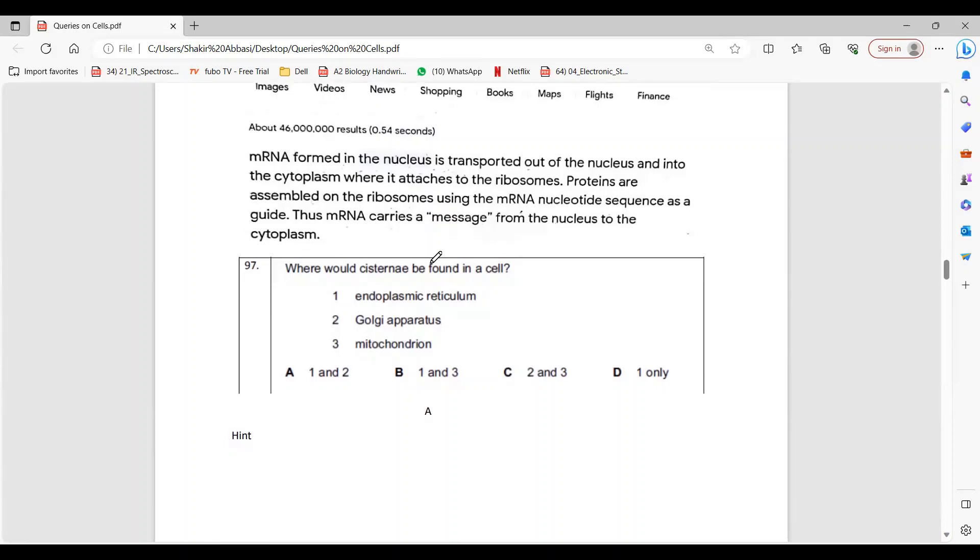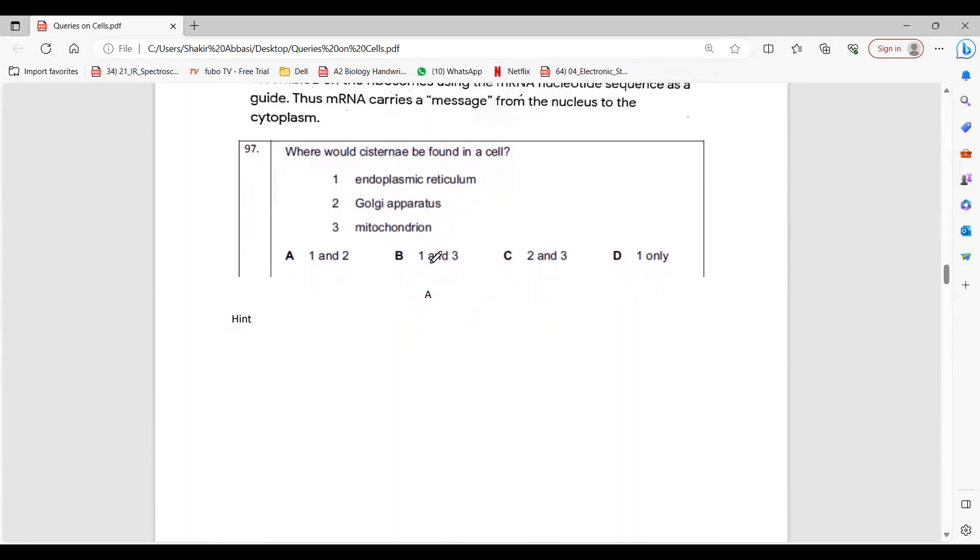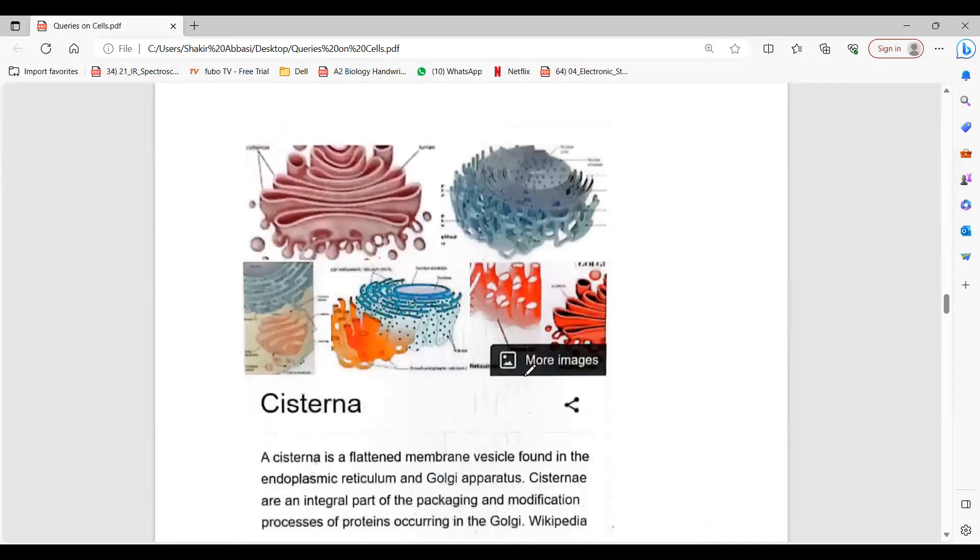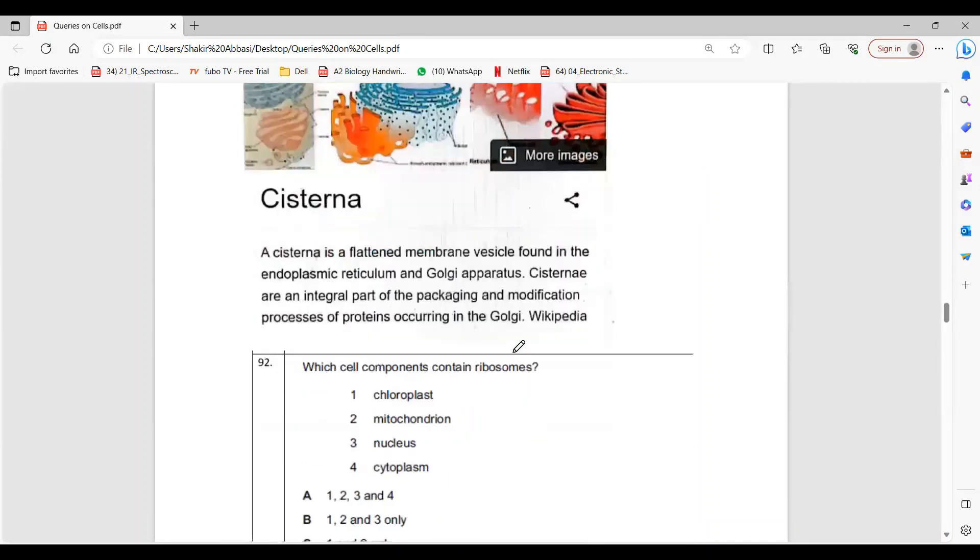By stopping the video - cisternae are the structures that Golgi and ER are made from. So obviously the mitochondria have cristae, so the answer is A. Here is the picture - these are cisternae, whether they belong to RER or Golgi.